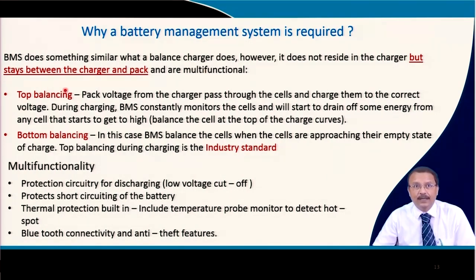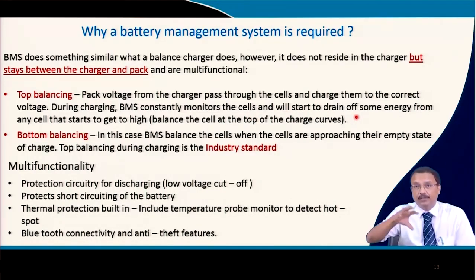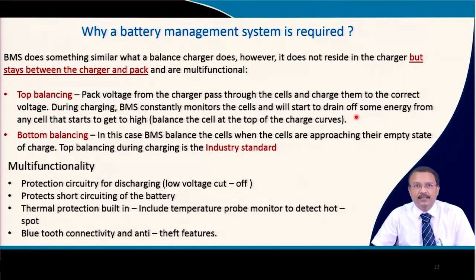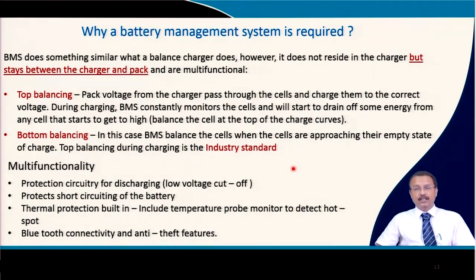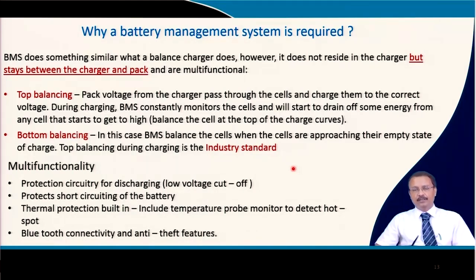The BMS performs top balancing: pack voltage from the charger passes through the cells and charges them to the correct voltage. During charging, the BMS continuously monitors the cells and drains off energy from any cell that gets overcharged. Bottom balancing is also possible, where the BMS balances cells as they approach their empty state during discharge. Top balancing is the industry standard — most BMS systems do this. Details of active and passive balancing will be covered in other lectures.